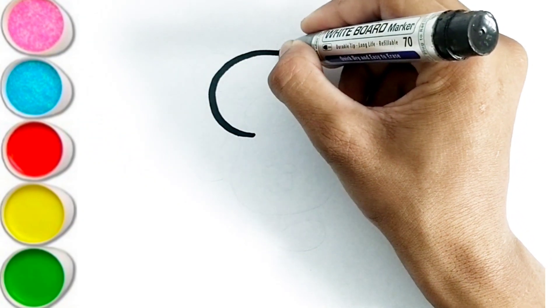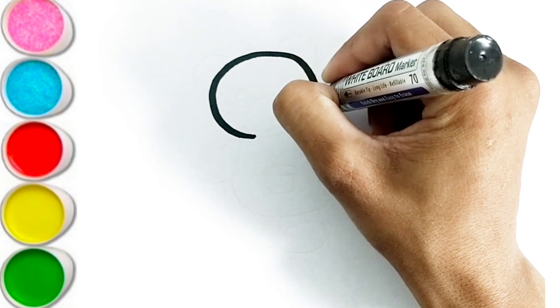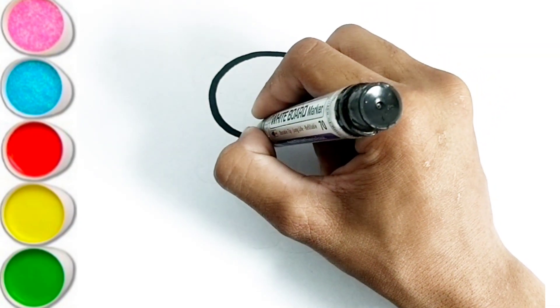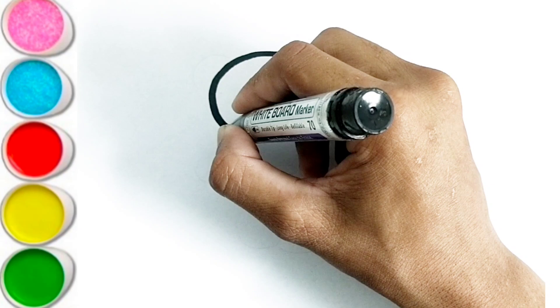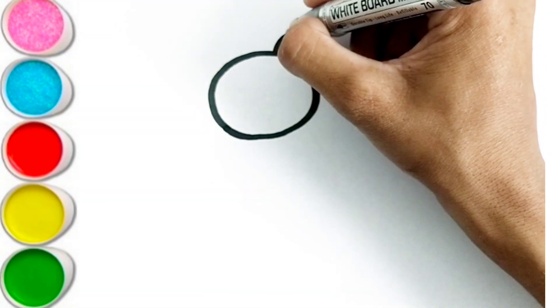A is for apple, a, a, apple. B is for ball, b, b, ball. C is for cat, c, c, cat. D is for doll, d, d, doll.